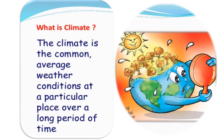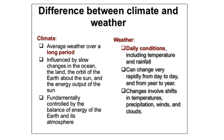What is climate? Climate is the common average weather conditions of a particular place over a long period of time. Climate does not change so frequently. It refers to the average value of several elements of weather relating to a period of more than 30 years.